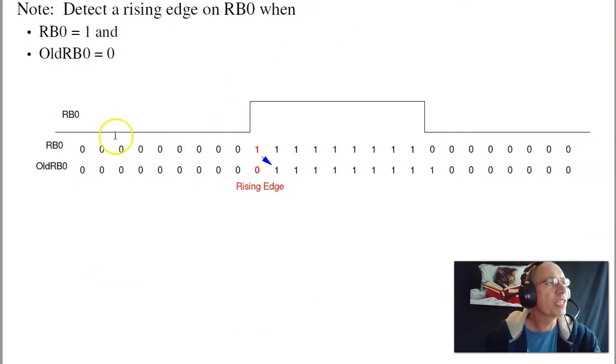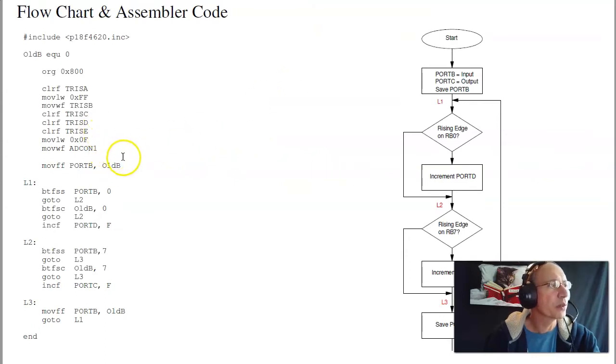A way to detect a rising edge is, if I look at the button push, this is what it looks like in terms of voltage when I push the button. I want to find the rising edge, which means it's currently RB0 is a one, and the previous reading was a zero. That zero, one transition is what indicates the rising edge. And software can do that as follows. I'm going to record the current value and old value, and then check. Is the current value a one and the old value a zero? If so, increment it. That's on port B, pin zero. Likewise on port B7. If the current value is a one and the old value is a zero, increment port C.